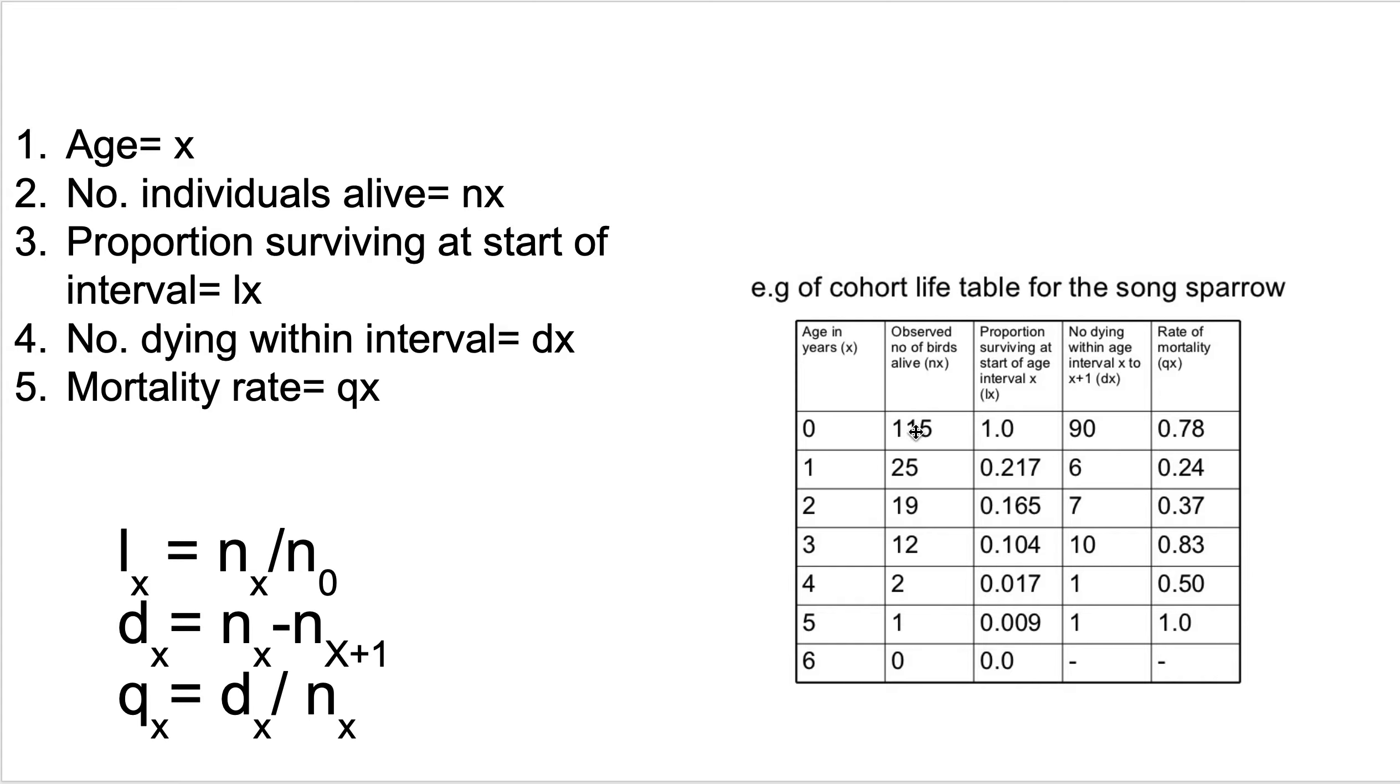So 115 birds are alive at year 0, and then 25 birds are alive at year 1, 19 birds are alive at year 2, 12 birds are alive at year 3, 2 birds are alive at year 4, 1 bird alive at year 5. The next column over is the proportion surviving. If you are born, then you are alive, so we have 100% survival, 1.0 proportion surviving. But then once we get into year 1, the proportion surviving at the start is 0.217. So we have a pretty big death rate there. So l sub x is the proportion surviving at the start of that interval. So number of individuals alive at year 1 over number of individuals alive at year 0. That's our proportion surviving at the start of the interval. 0.165 is 19, which is the number of individuals alive at year 2, over 115, number of individuals alive at year 0.